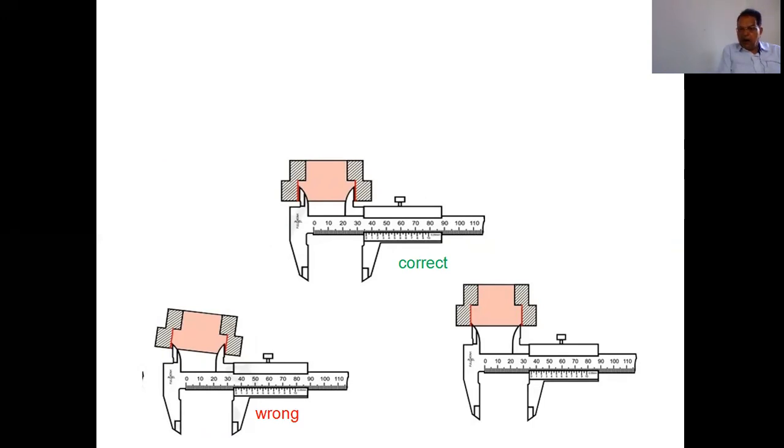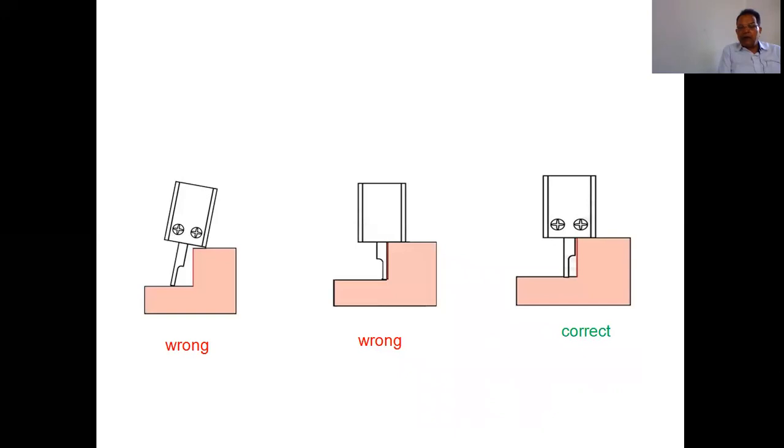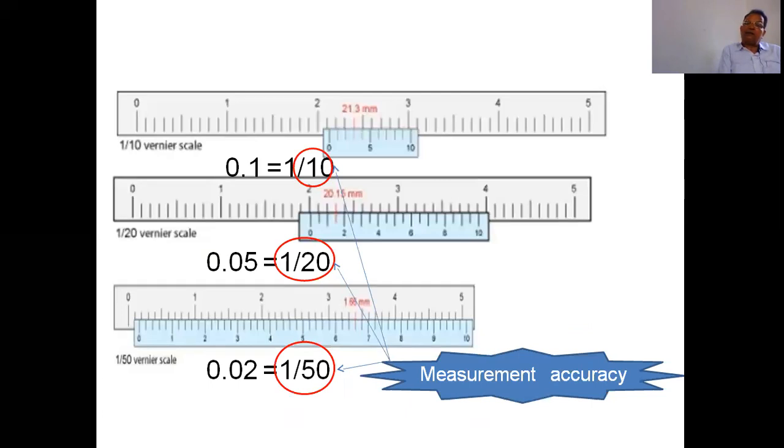And then the depth measurement. The depth measurement method at 90 degrees will be measured correctly. On the left side, there are two figures showing wrong methods. The right side will be measured correctly.